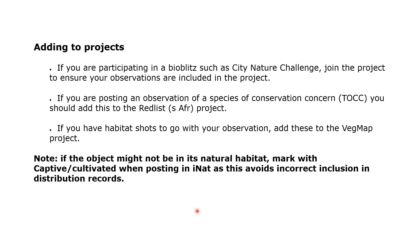If you're interested in adding to projects: if participating in a BioBlitz such as the City Nature Challenge, join the project to ensure your observations are included. If posting an observation of a species of conservation concern, add it to the Red List project by joining that project, then go back to the observation and add it to the project. If you have habitat shots, add these to the VegMAP project — again you would need to go back to an already-submitted observation to add it to that project. Remember: if the object might not be in its natural habitat, mark it as captive or cultivated when posting on iNat, to avoid incorrect inclusion in distribution records.